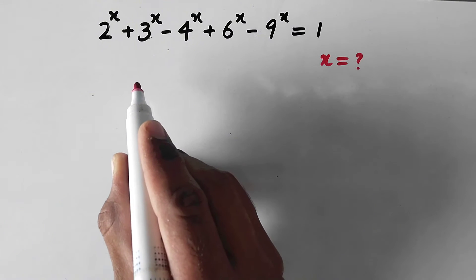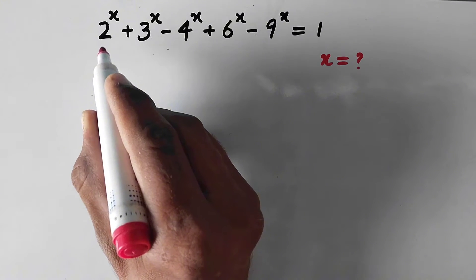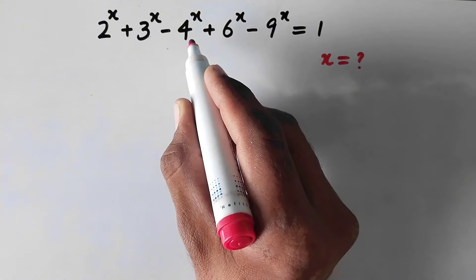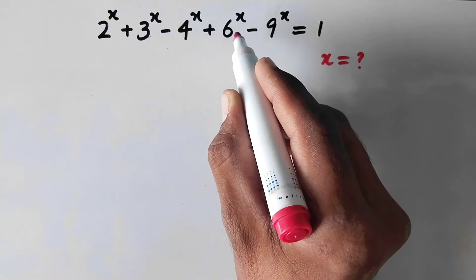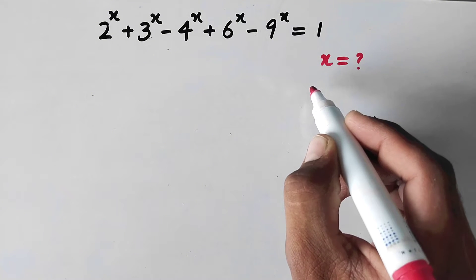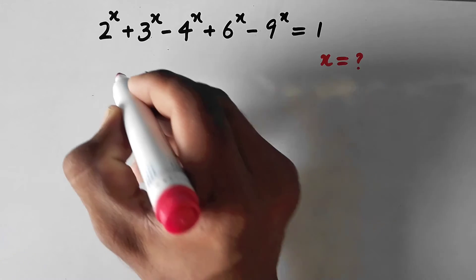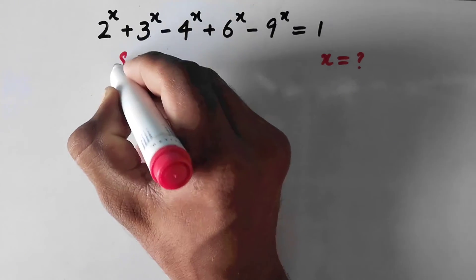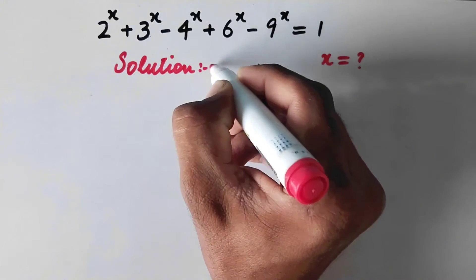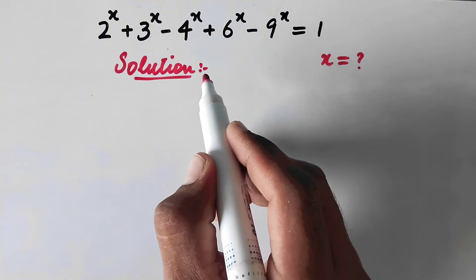Hello everyone and welcome. Let us solve this nice exponential equation: 2 to the power x plus 3 to the power x minus 4 to the power x plus 6 to the power x minus 9 to the power x is equal to 1. We need to find the value of x. The solution is going to be very interesting.